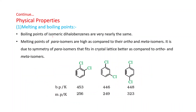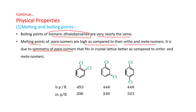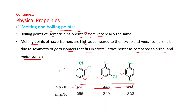Boiling points of isomeric dihalobenzenes are very nearly the same. However, melting points of para isomers are high compared to their ortho and meta isomers, due to the symmetry of para isomers which fits better in the crystal lattice. For example, in dichlorobenzene, the boiling points of ortho, meta, and para isomers are almost the same, but the melting point of the para isomer is very high because it is more symmetrical and fits very well in the crystal lattice.